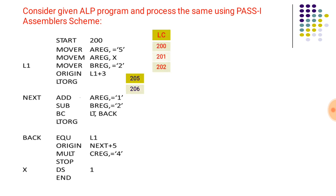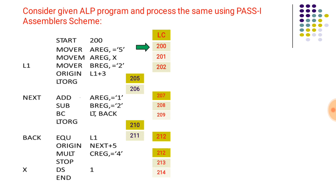Now we will process a simple ALP program using the pass one assembler scheme. The START assembler directive indicates that the location counter should hold the address specified by START. Here, the location counter starts at 200 as the START statement has address 200. The first address is 200, and subsequent addresses are incremented by one word.